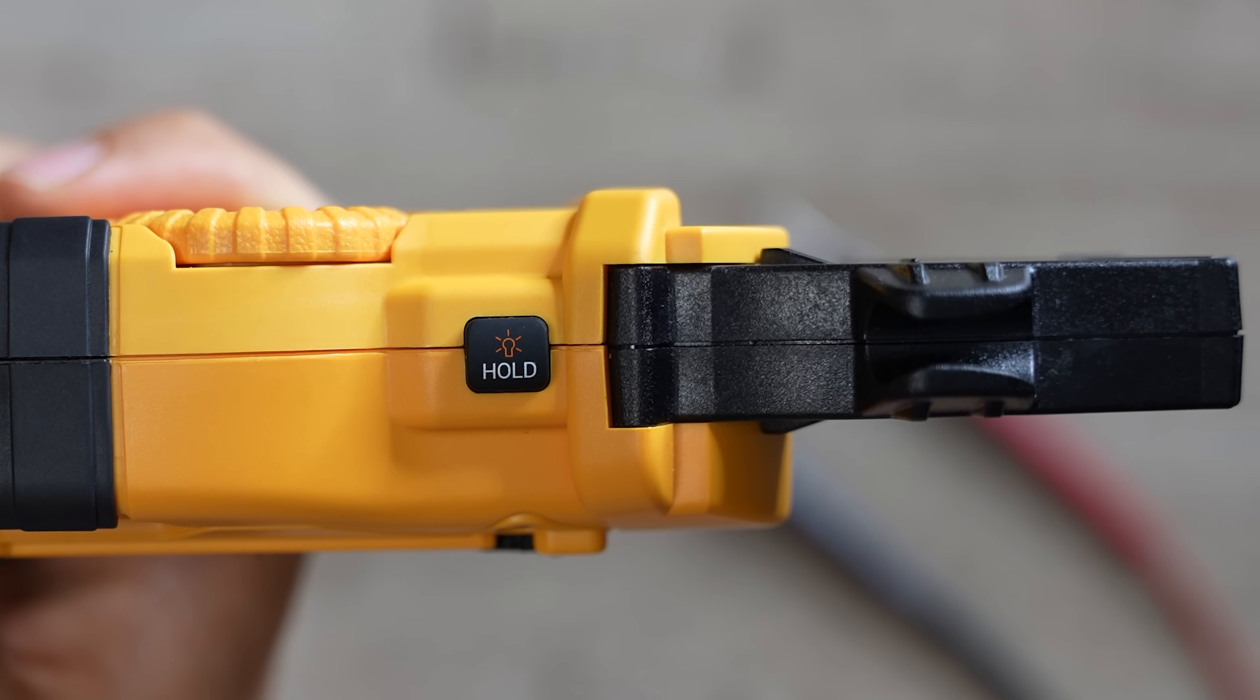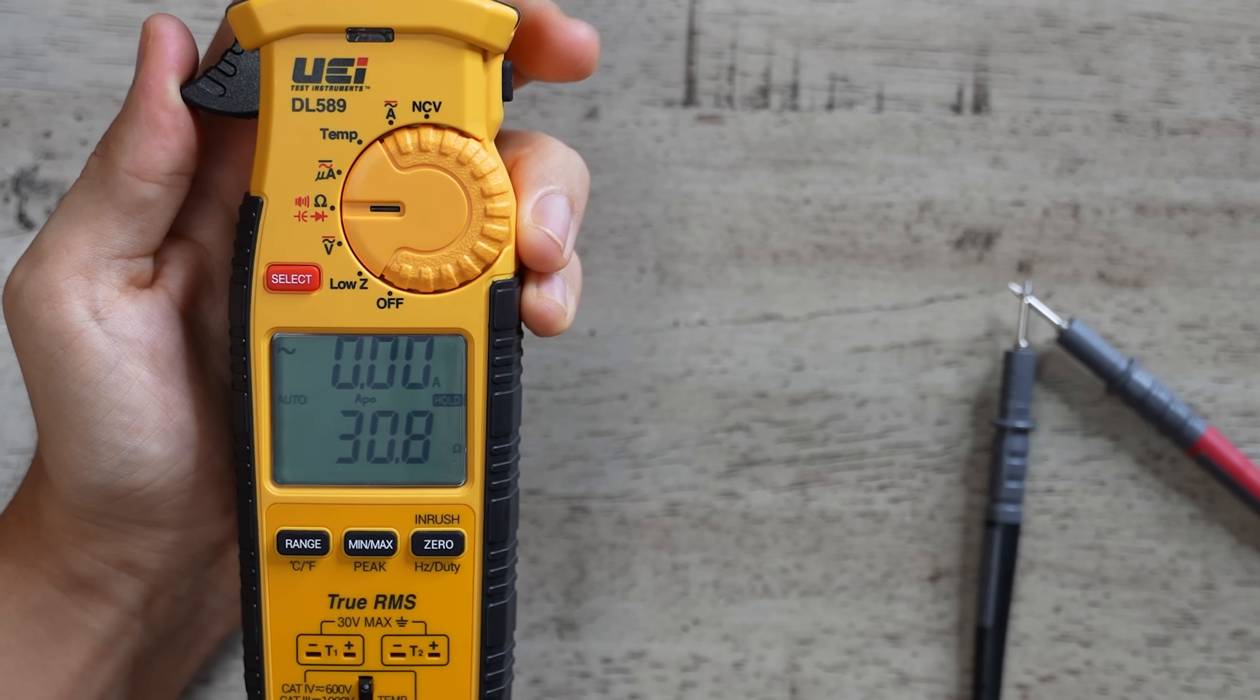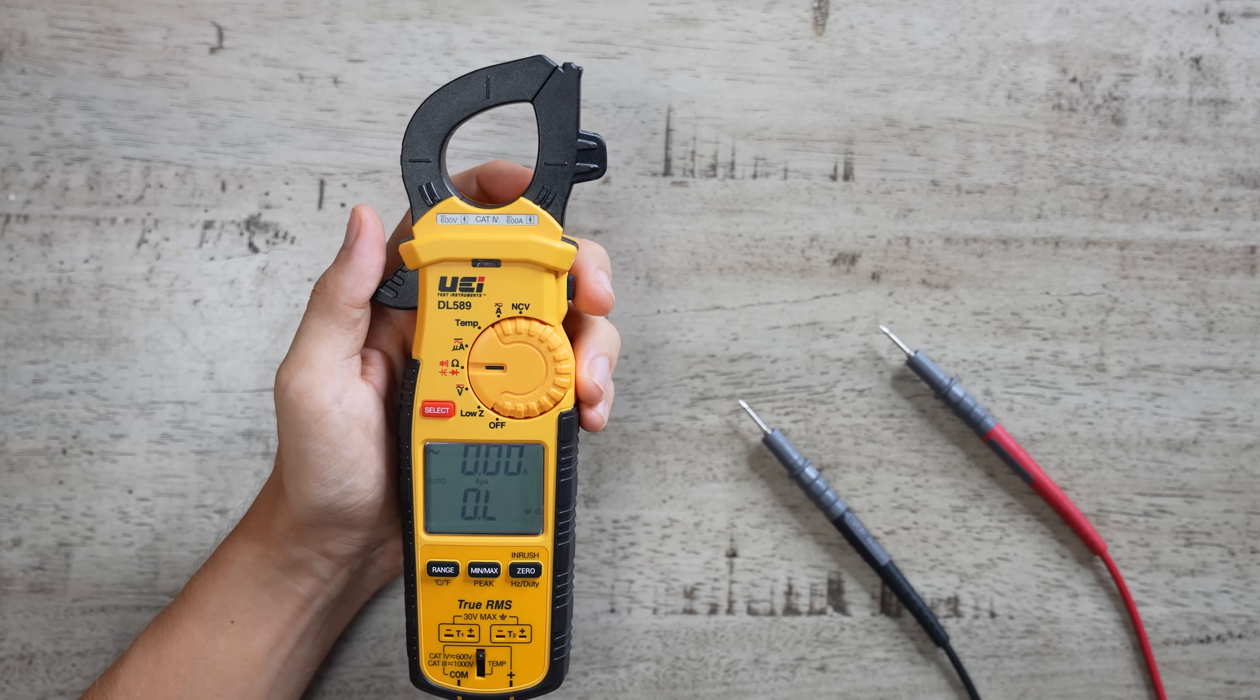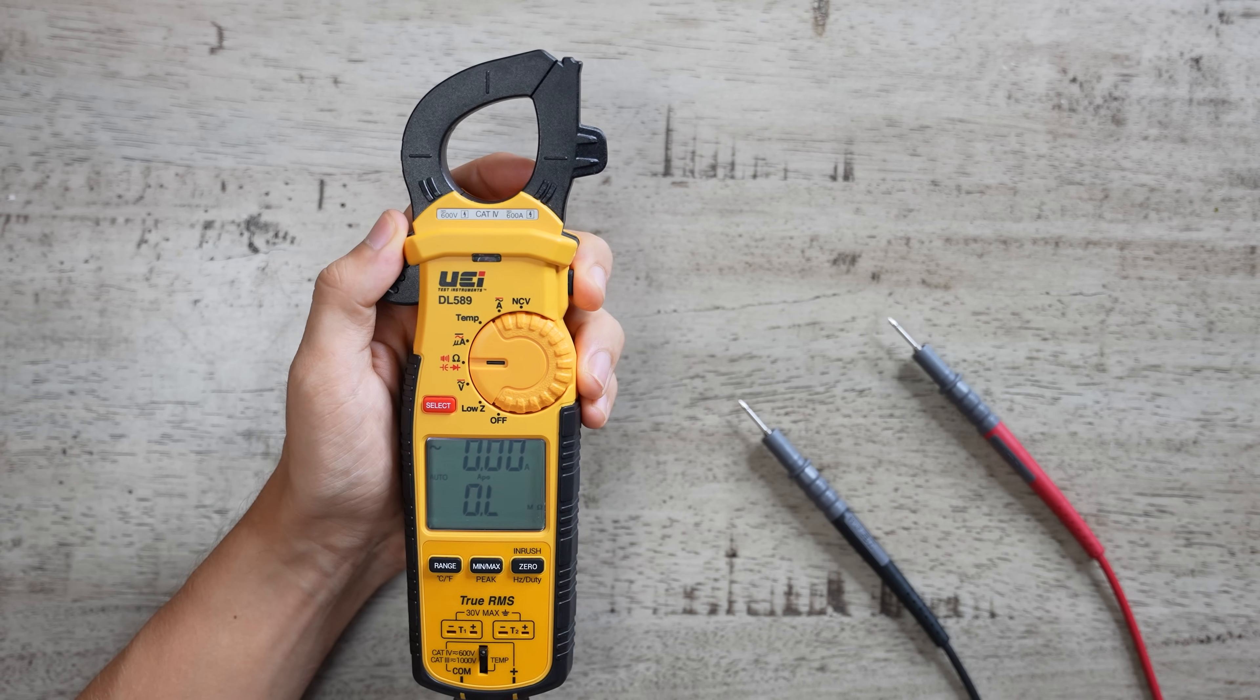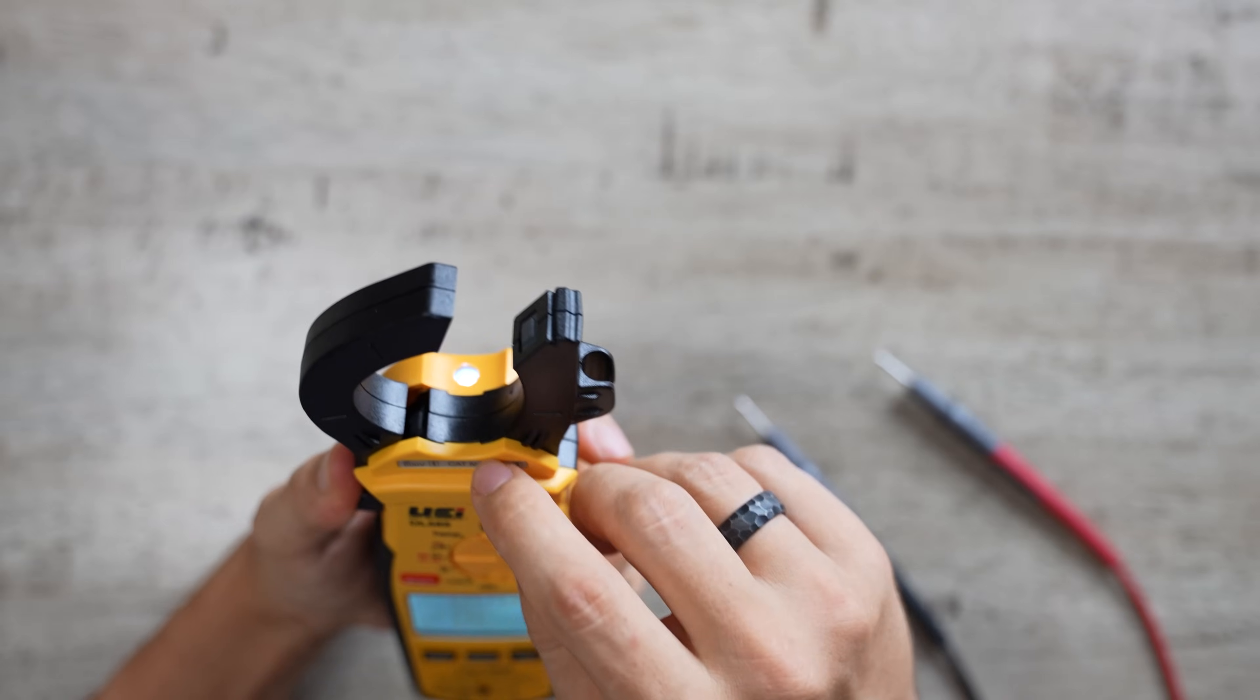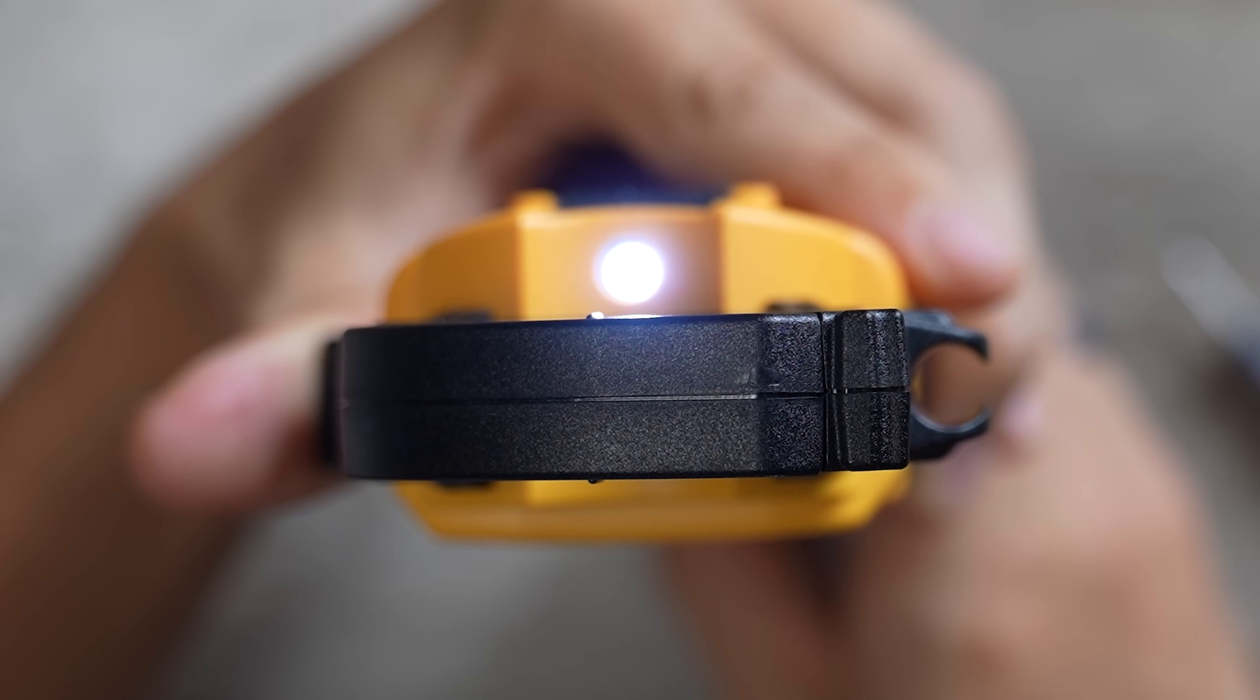Most meters will also have a hold button, which, when pressed, will freeze the reading on a screen just in case you want to take a picture of it or show it to somebody before it disappears. And a backlit display is another feature that most meters will have. And with this particular meter, there's also a little flashlight that lights up right on the tip of the meter, just in case you need a little extra light.